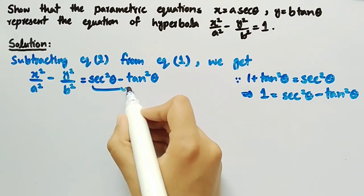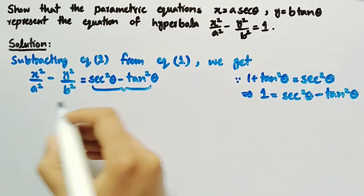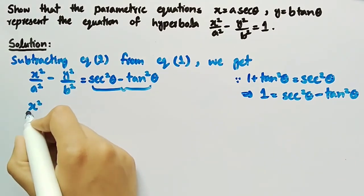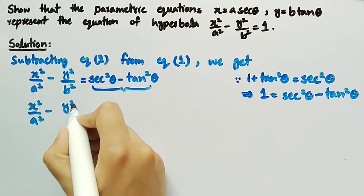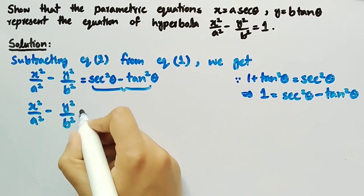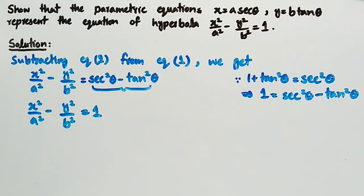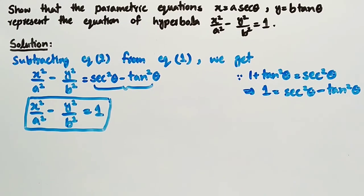So we can replace sec²(θ) − tan²(θ) with 1 and write it as x²/a² − y²/b² = 1, which is the required result. Hence, we have shown that the parametric equations x = a·sec(θ) and y = b·tan(θ) represent the equation of hyperbola x²/a² − y²/b² = 1.